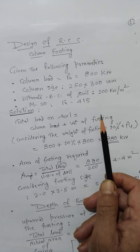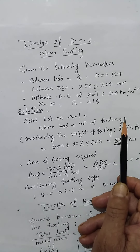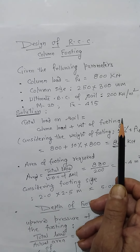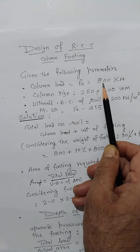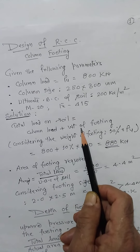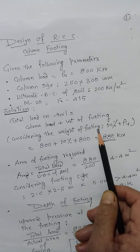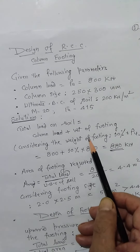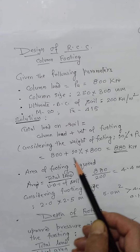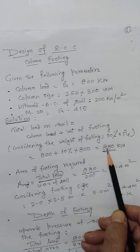To calculate the footing, first we have to see how many types of loads are coming on the soil. There are two types of general load: load from the column and the self weight of the footing. Generally, self weight of the footing is taken as 10% of the weight of the column. So the total weight coming on the soil is 800 kN plus 10%, which is 880 kN.